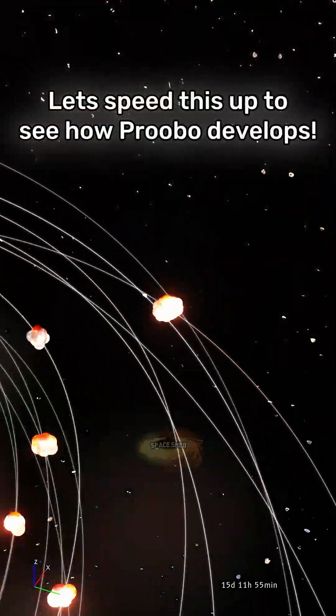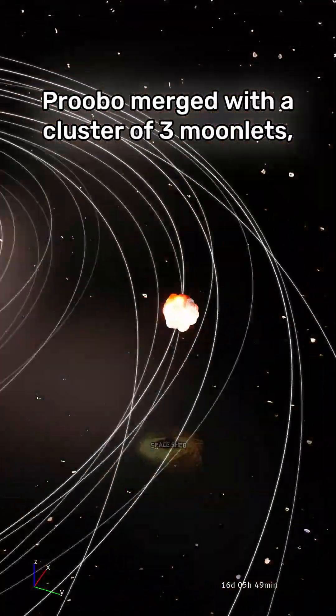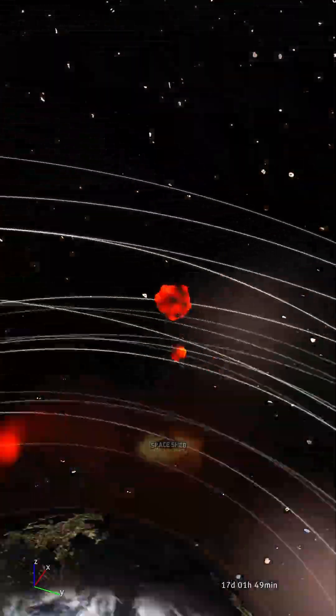Let's speed this up to see how Approval develops. Approval merges with a cluster of three moonlets.